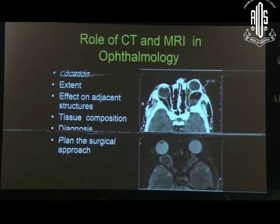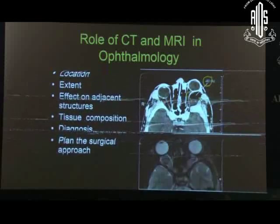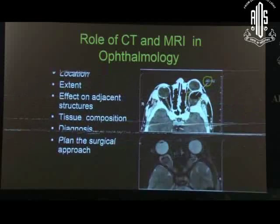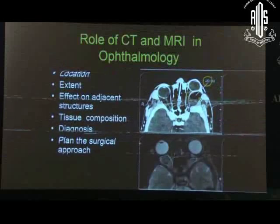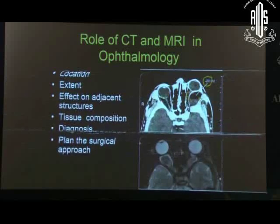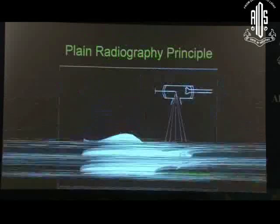Also, to find the effect on adjacent structures — such as this optic nerve has been displaced nasally by this dermoid. Looking at the Hounsfield values, you can actually say that it is a dermoid already without even doing histopathology. You know tissue composition by knowing the intra-tissue Hounsfield value. And also to plan surgical management.